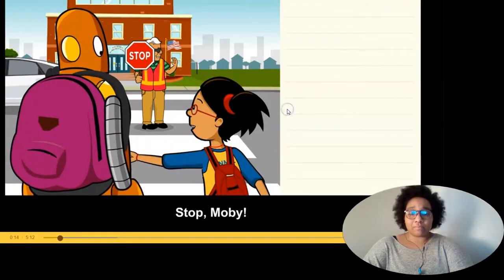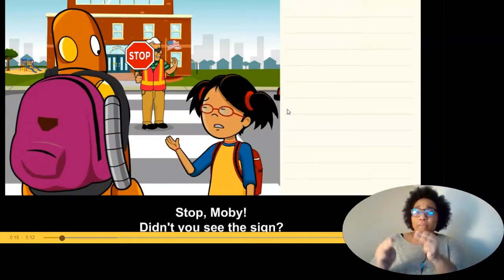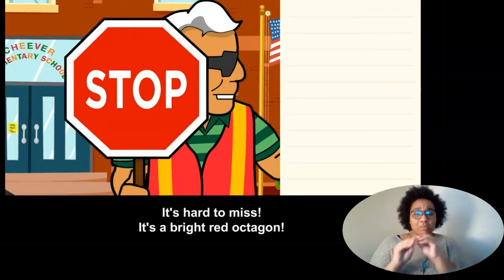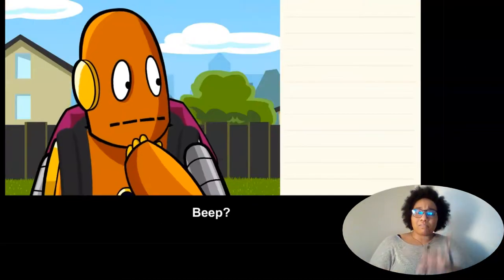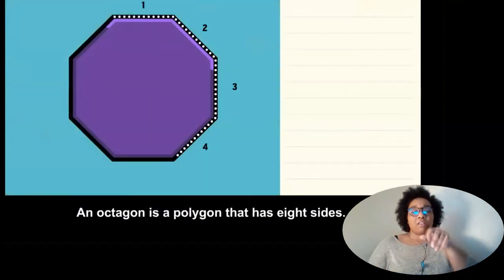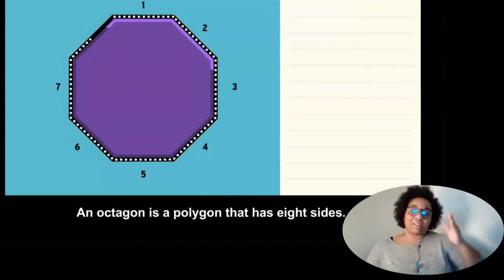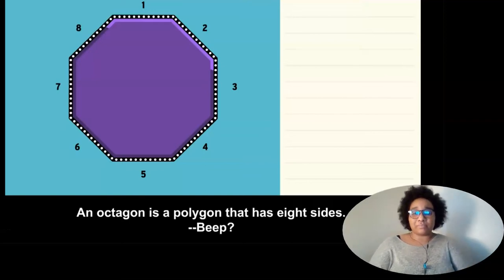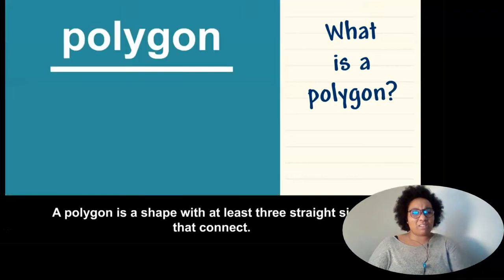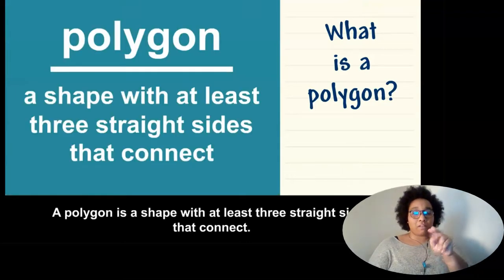Stop, Moby! Didn't you see the sign? It's hard to miss. It's a bright red octagon. An octagon is a polygon that has eight sides. What is a polygon?